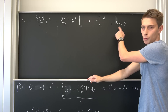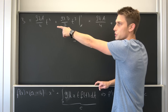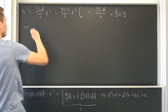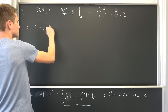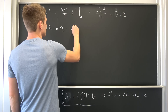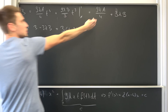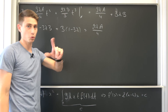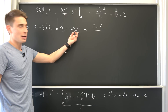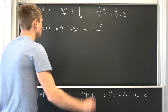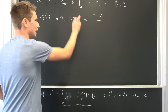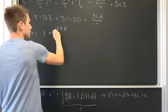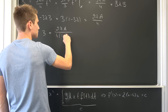We want to solve for b, so we subtract the 3λb term from both sides and factor: b minus 3λb equals b·(1 − 3λ), which equals 9λa/4. Now we divide both sides by (1 − 3λ). Note that λ cannot equal 1/3, otherwise this wouldn't work — so we place that restriction on lambda. Therefore b equals 9λa divided by 4·(1 − 3λ).